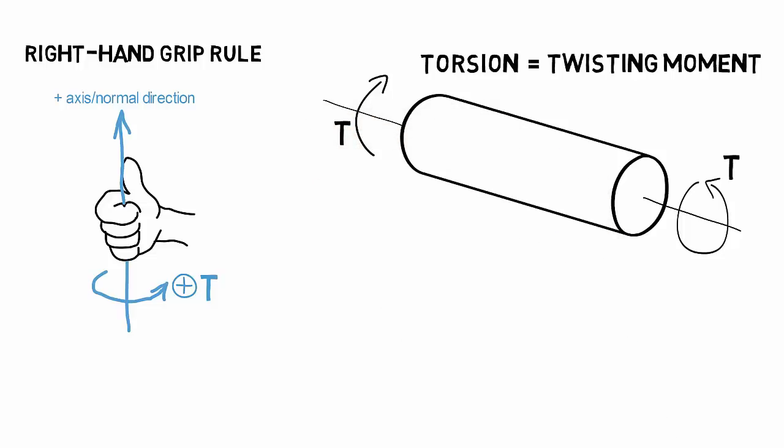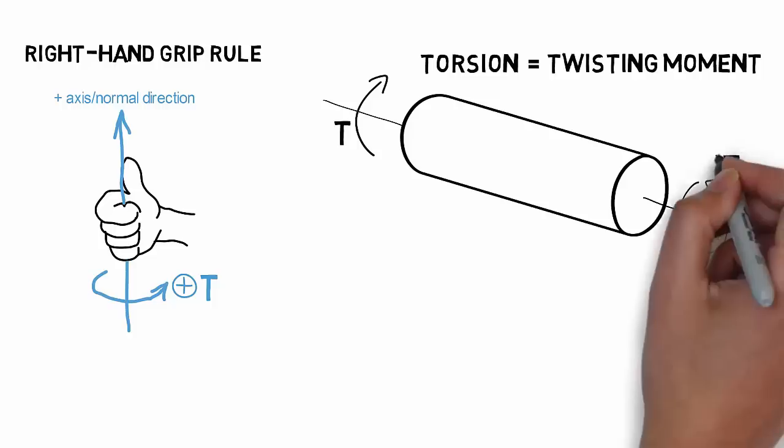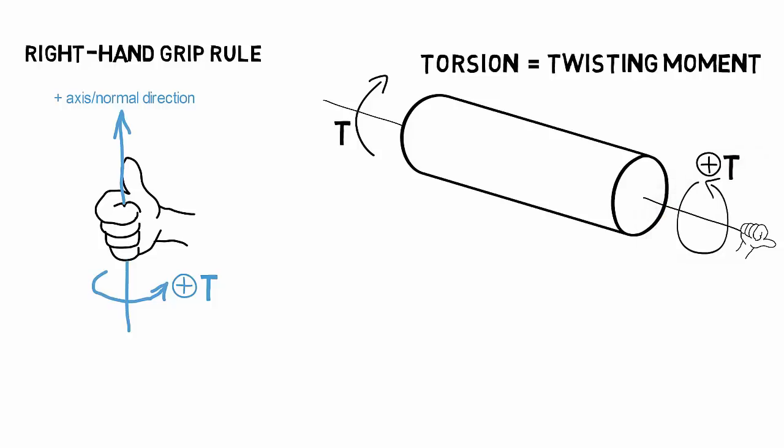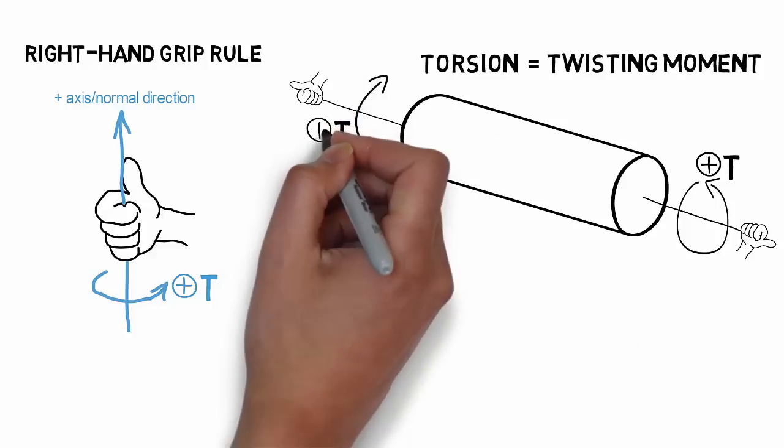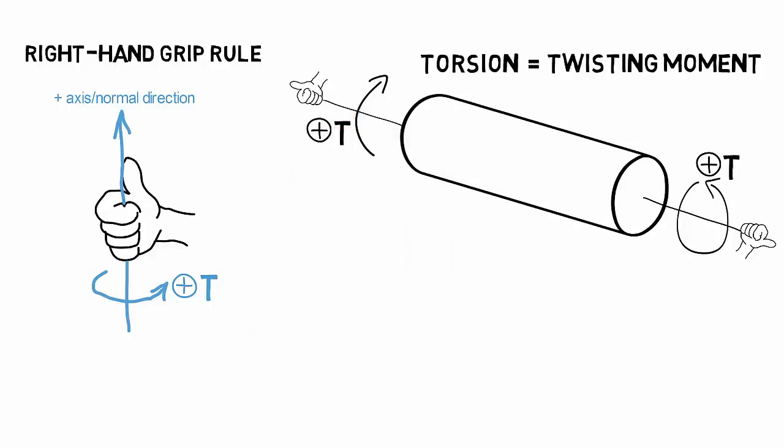Returning to our cylindrical shaft on the right, we see that according to this rule the rightmost torsional moment is positive due to the outward normal of the shaft pointing to the right, and the torsional moment on the left is also positive due to the outward normal of the shaft pointing to the left.